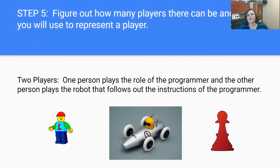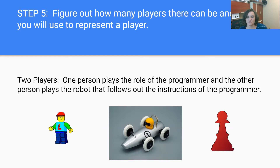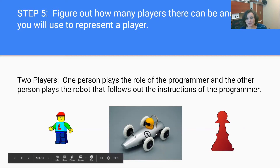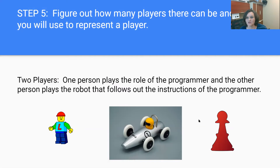Then you need to figure out how many players there are going to be in your game and what will represent your players. We used real players to play our chalkboard game, but you could use other items as well. We chose two players — one person played the role of the programmer and gave instructions, and the other played the role of the robot and moved according to the programmer's instructions. If you're doing a paper board game, you could use Lego figures, action figures, or pieces from another board game to represent your players.